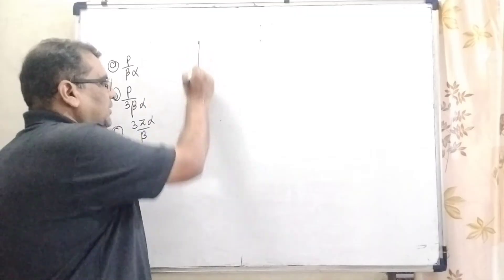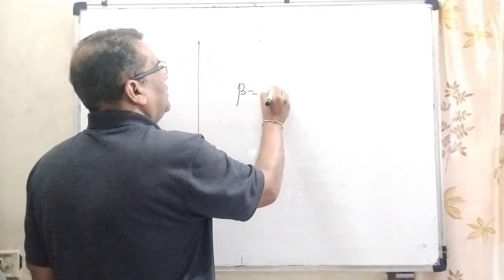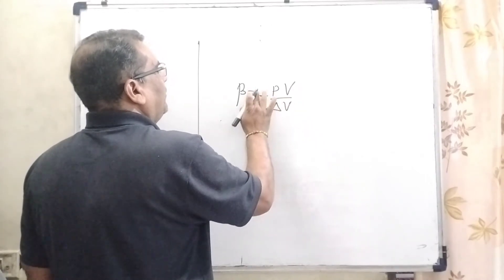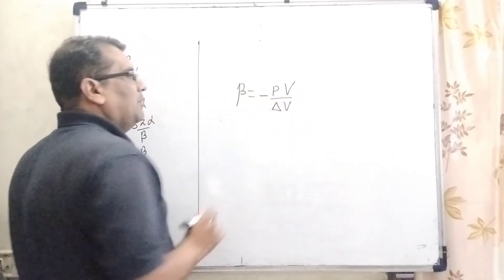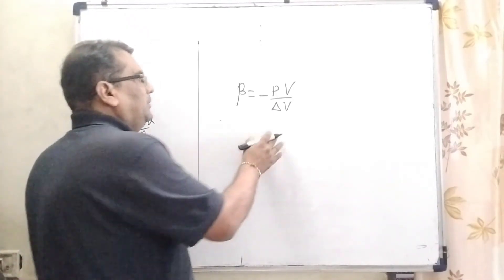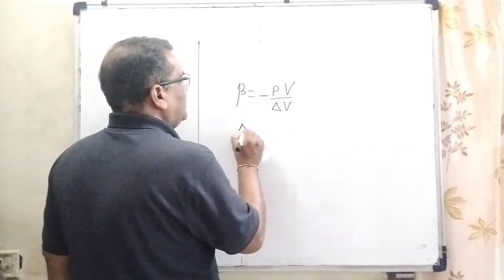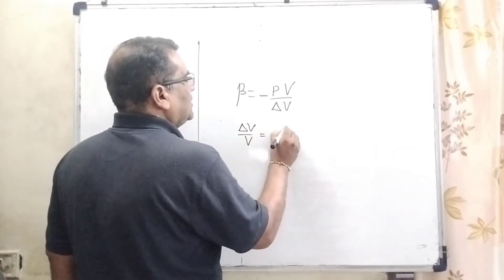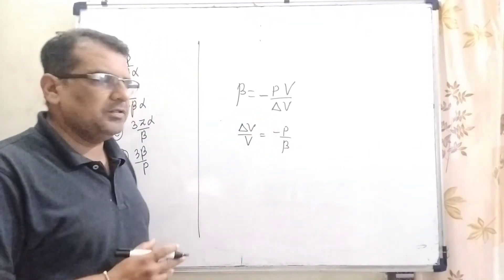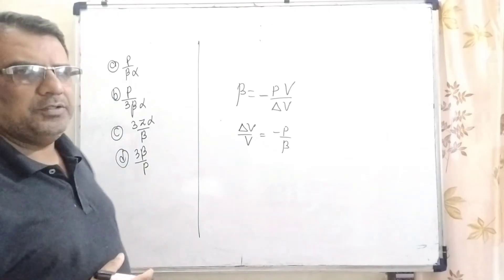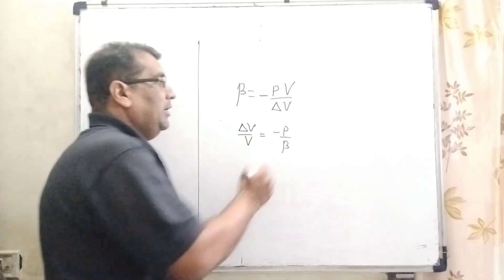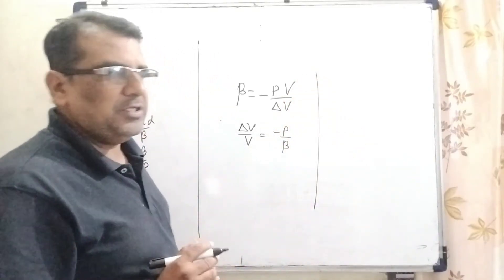As we know, bulk modulus β = PV/ΔV. Here the minus sign shows a decrease in volume, so ΔV/V = P/β. The minus sign can be neglected since all options are positive. This gives us the fractional change in volume due to applied pressure.